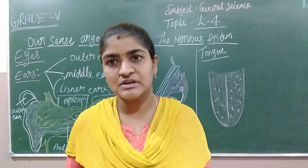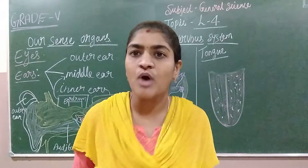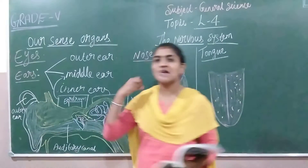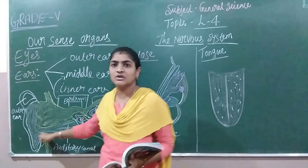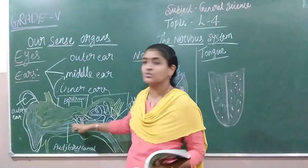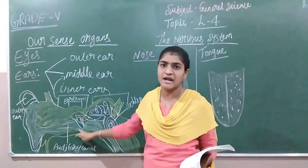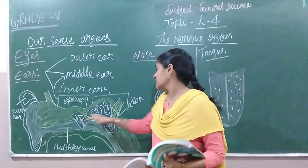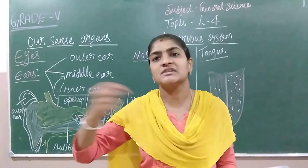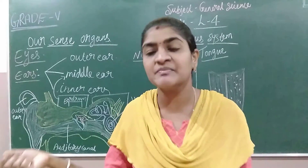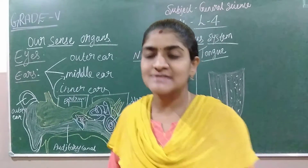Through the outer ear we can hear the sound. The sound enters the outer ear, then passes into the middle ear — because in the middle ear we are having an eardrum. And it will be passed into the inner ear. From the inner ear, it is connected to our nervous system and we can find out what sound it is.